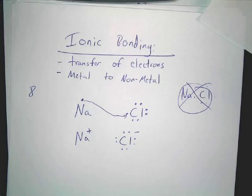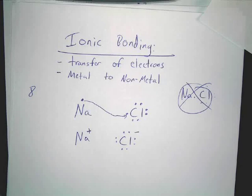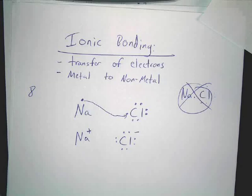Now here's the last part of this — and this is the simplest part that makes the most sense. If you're at an atomic level and you've got a sodium and a chlorine, sodium's positive, chlorine's negative, and they're near each other — what's going to happen? They're going to attract. Positive and negative form an electrostatic attraction and they bond together.